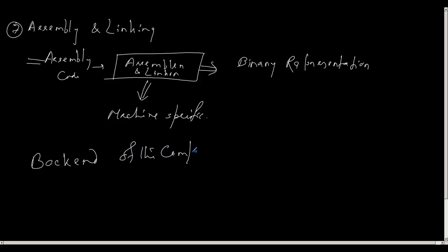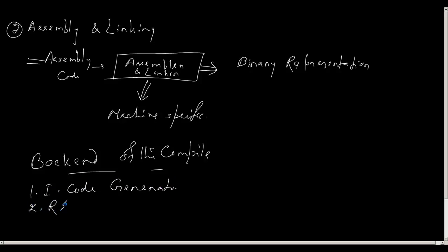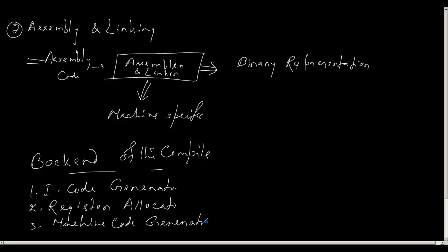So from intermediate code generation to machine code generation constitutes the back end of the compiler. The back end consists of three stages: first, intermediate code generator; second, register allocator; and third, machine code generator. All of these things together constitute the entire structure of a compiler.